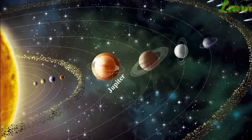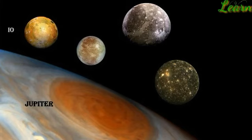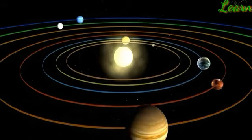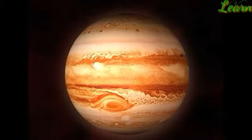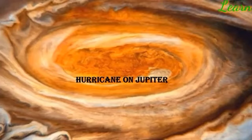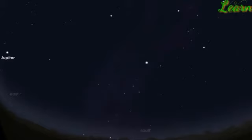Jupiter is the largest planet in the solar system. It has four large moons called Io, Europa, Callisto, and Ganymede, and many smaller moons. Jupiter rotates the fastest of all planets. It has a famous Great Red Spot, which is a massive hurricane on Jupiter. Jupiter is easily visible in the night sky as it appears very bright.